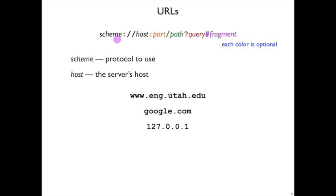After the HTTP scheme, we have a host, which is an IP name. It can be a string name like eng.utah.edu or google.com, or it can also be a numerical address like 127.0.0.1. These are all allowed by using getaddrinfo, just as we did in our other programs.